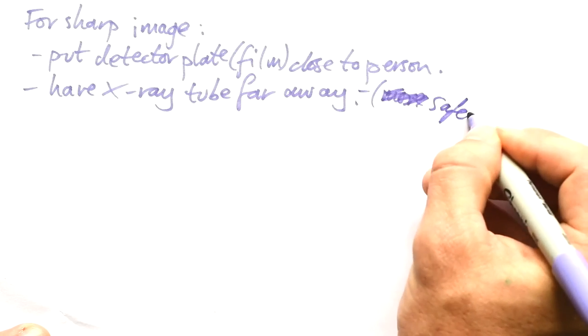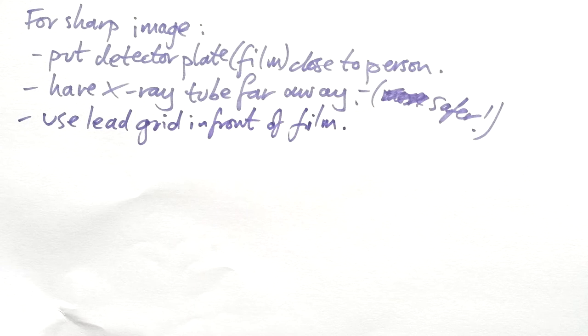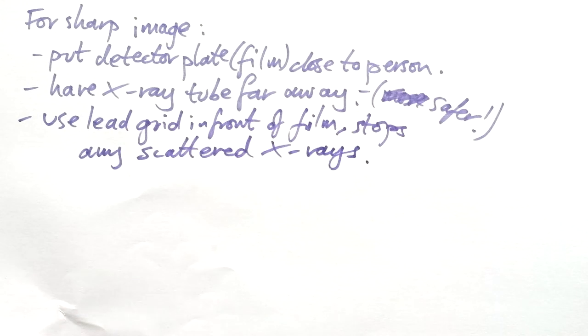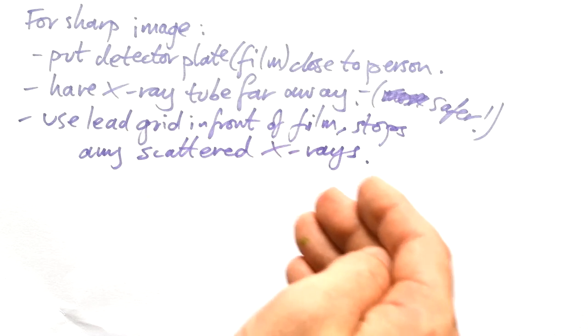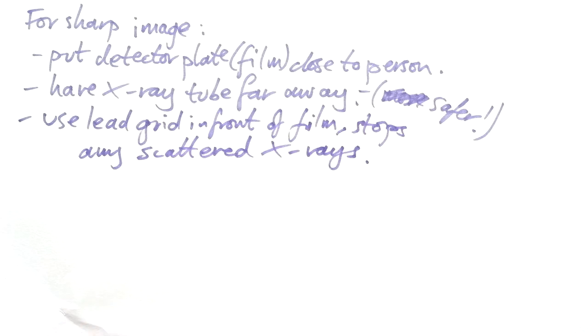If you use a lead grid in front of the film, that stops any scattered X-rays. And so that's making sure that it's only the X-rays coming directly down, not ones that are coming in at an angle that aren't from the tube directly hitting the film.